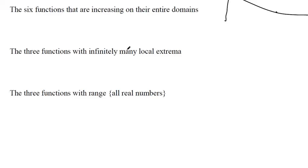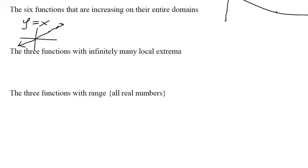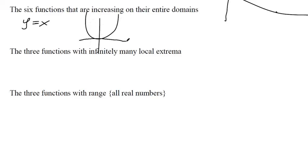Now, the six functions that are increasing on their entire domain. The y equals x function is always increasing because its slope is positive one — pick any two points and you'll always get a positive slope. Y equals x squared is not always increasing because over part of its domain you get a negative slope between two points, so that one doesn't count.